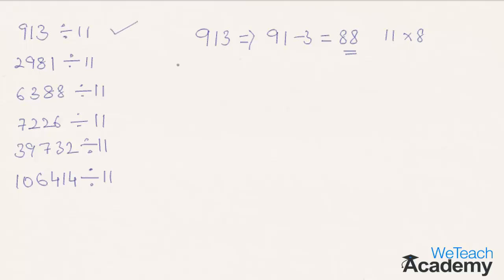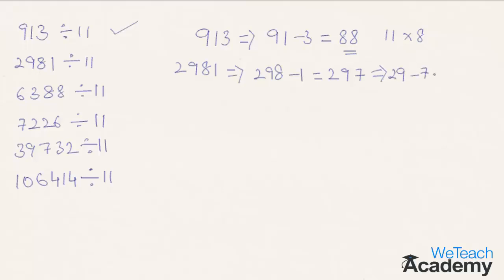Coming to the next number, that is 2981. According to the concept, subtract the last digit 1 from the remaining number 298. We get 298 minus 1, which is equal to 297. Now repeating the concept again: subtract the last digit 7 from the remaining number 29, which gives 29 minus 7 equals 22. Since 22 is divisible by 11, the given number 2981 is also divisible by 11.